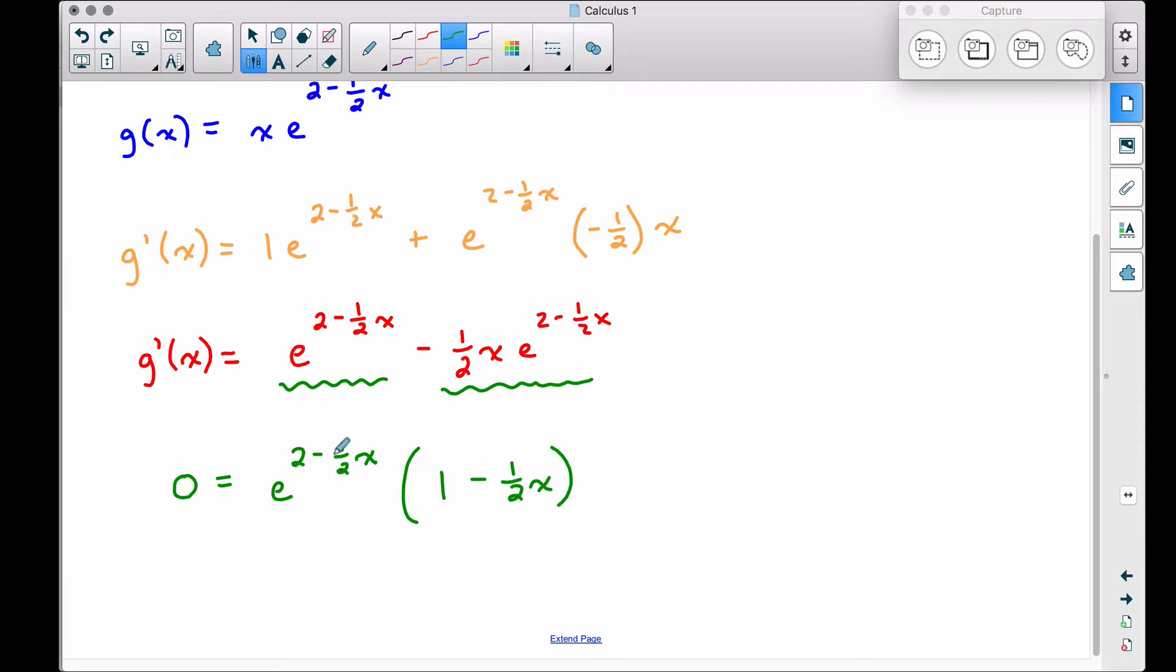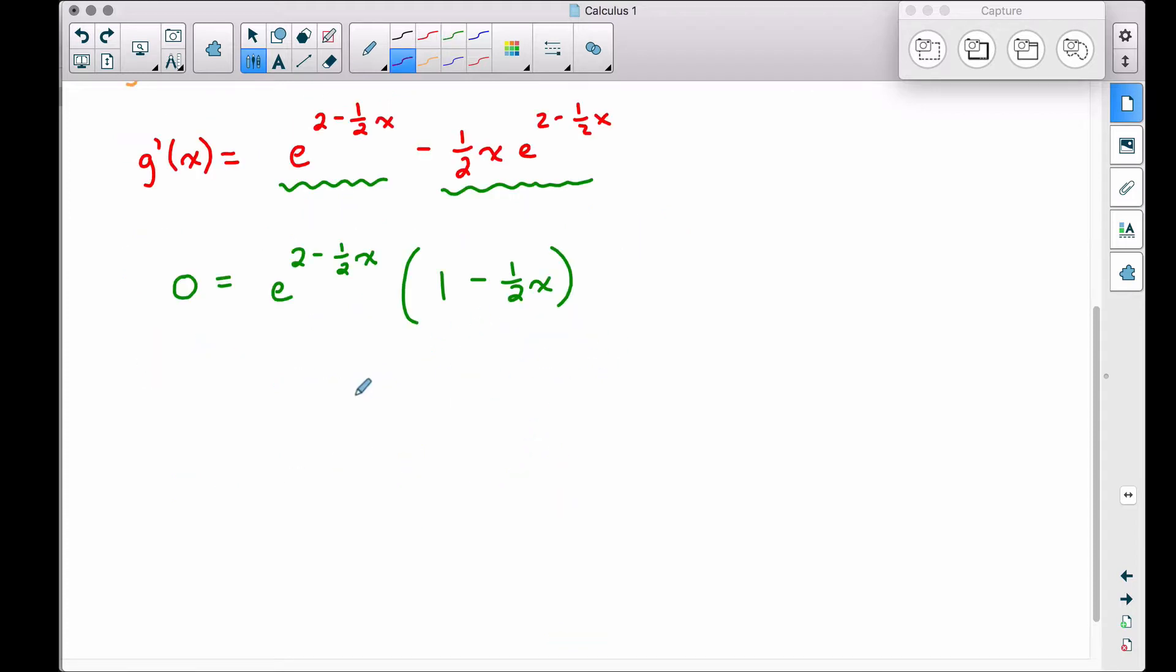And you can check your work here by distributing back. If we take this and multiply it by one, we do get that piece back there. Taking this stuff times this piece here, we get this piece back right here. Now that we've factored, we can set each factor equal to zero.